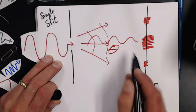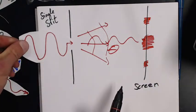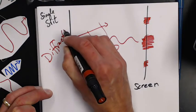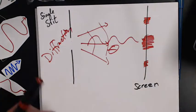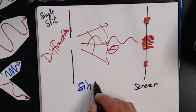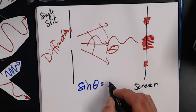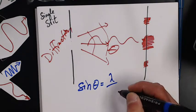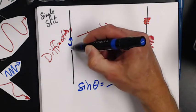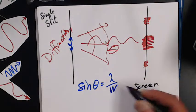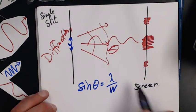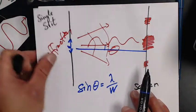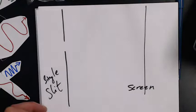I'm gonna have a big spot here in the middle. I'm gonna get destructive interference happening here. It's gonna spread out at some angle theta. This is called diffraction, and the sine of that angle is going to be related to the wavelength of the light and the width of my slit.